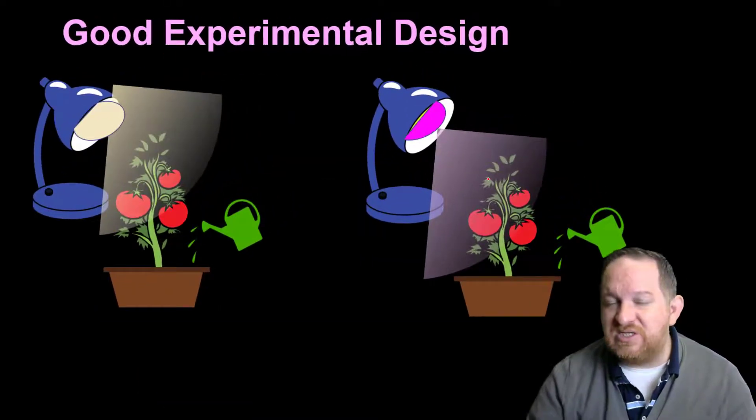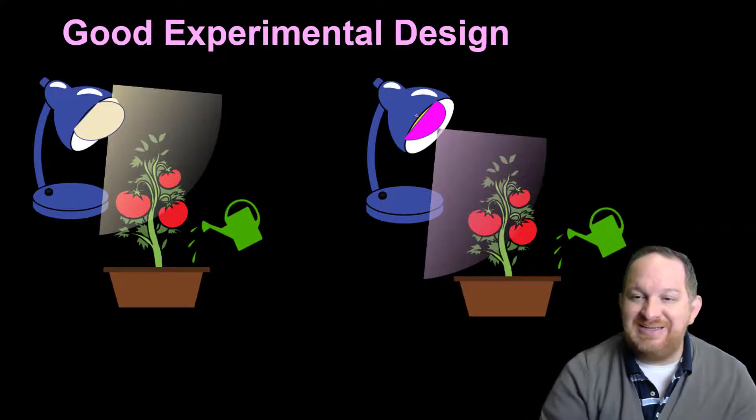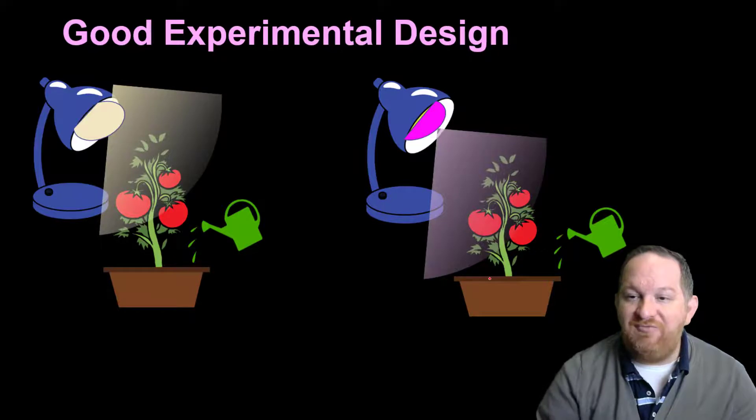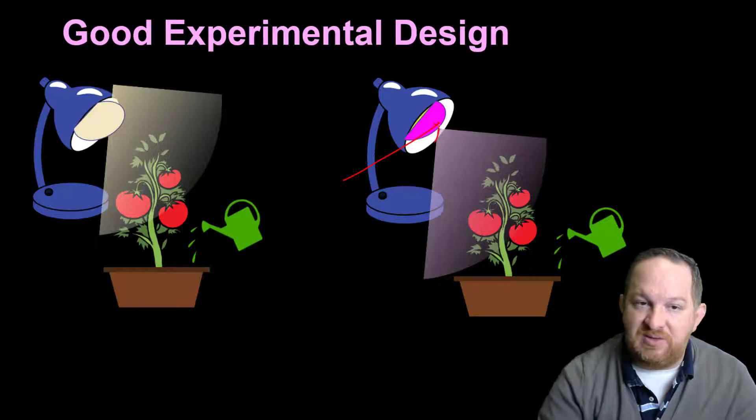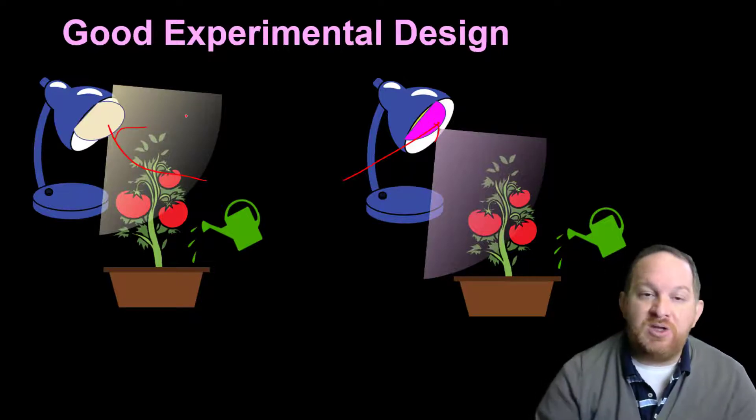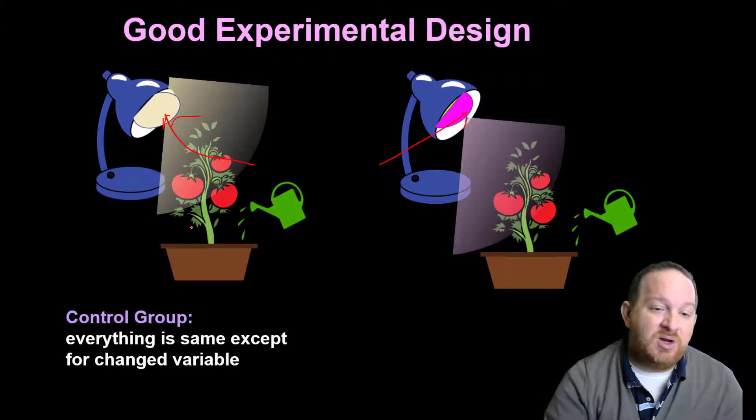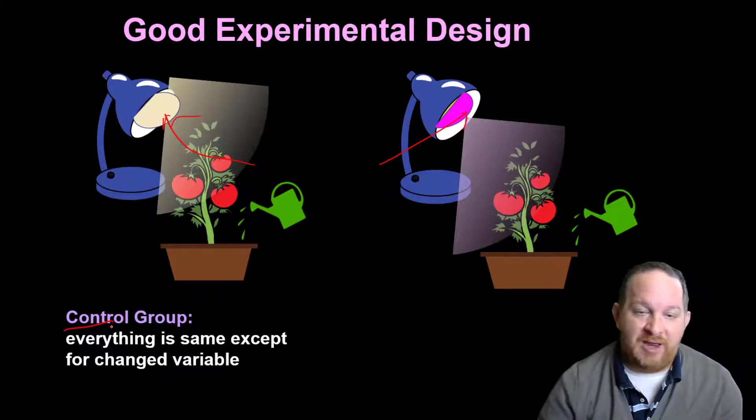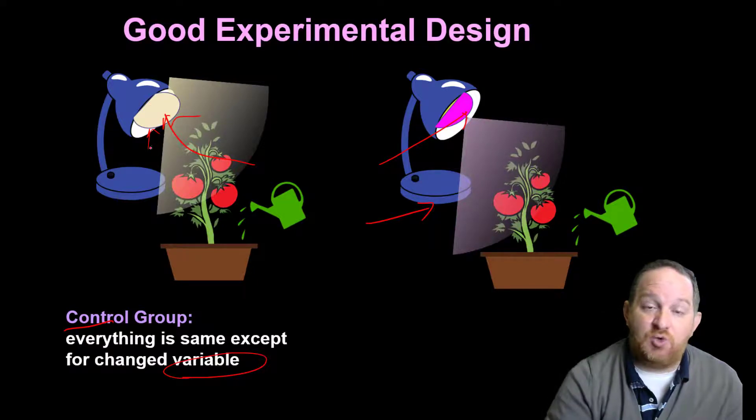We then want to get a little bit more into the design. You'll notice a few things. Notice that in my design here everything's the same except one thing. Here we're using this light, here we're using the white light. We would call this sort of original experiment that doesn't have the change in color, we're going to call this our control group. This is the group where everything's the same as this, but we didn't change the variable. So this is the most like natural sunlight, this white light, so this is going to be my control group.